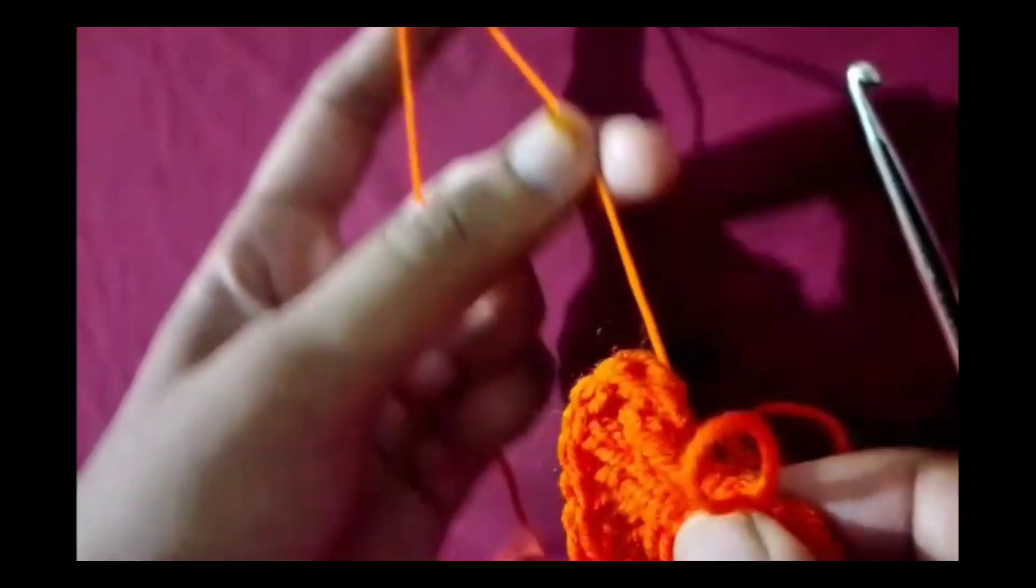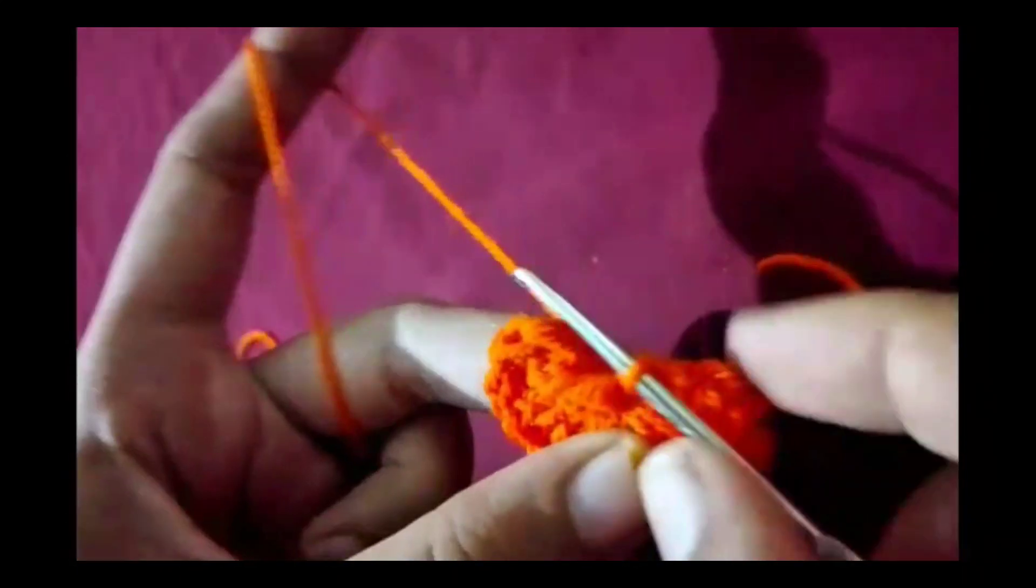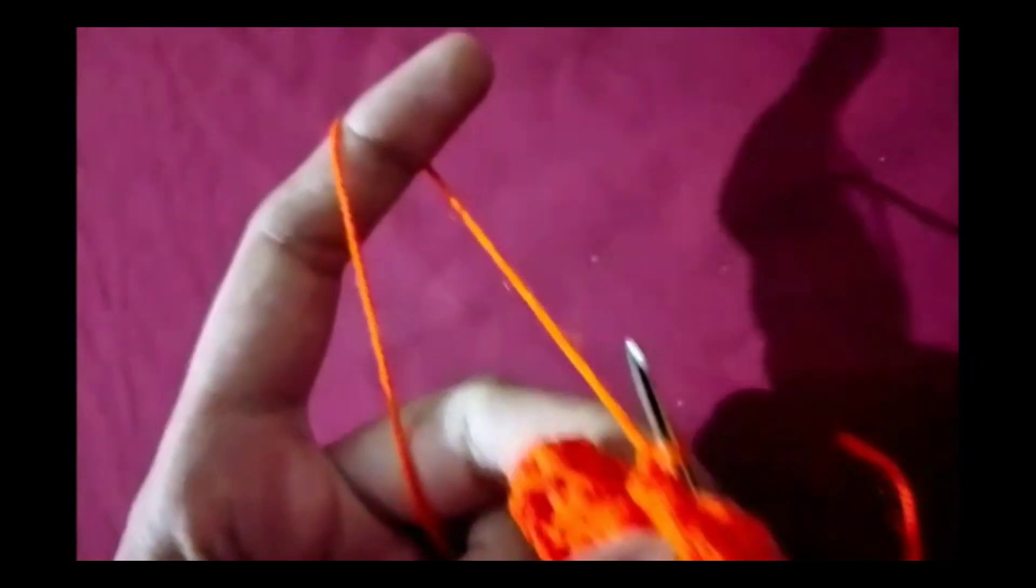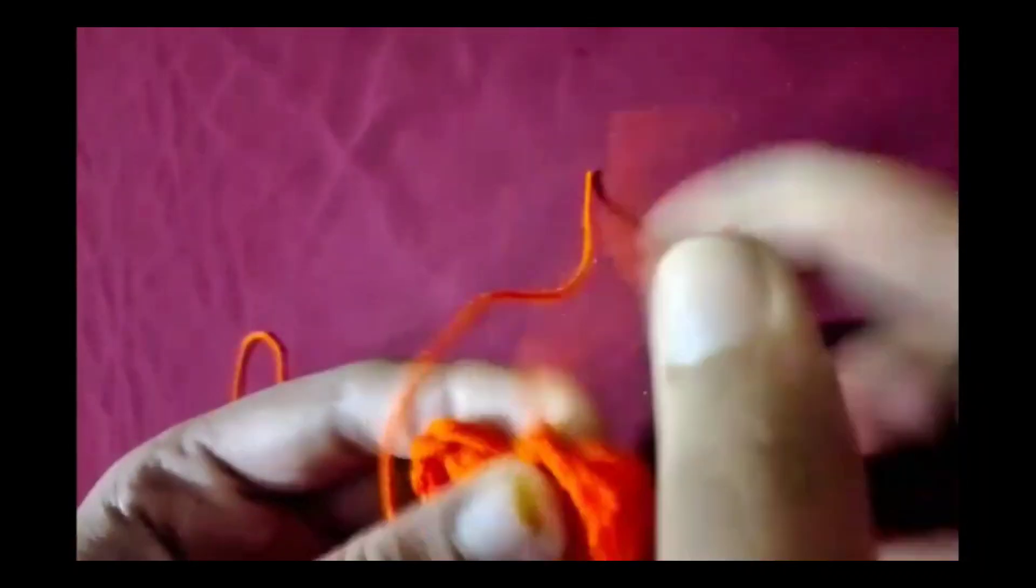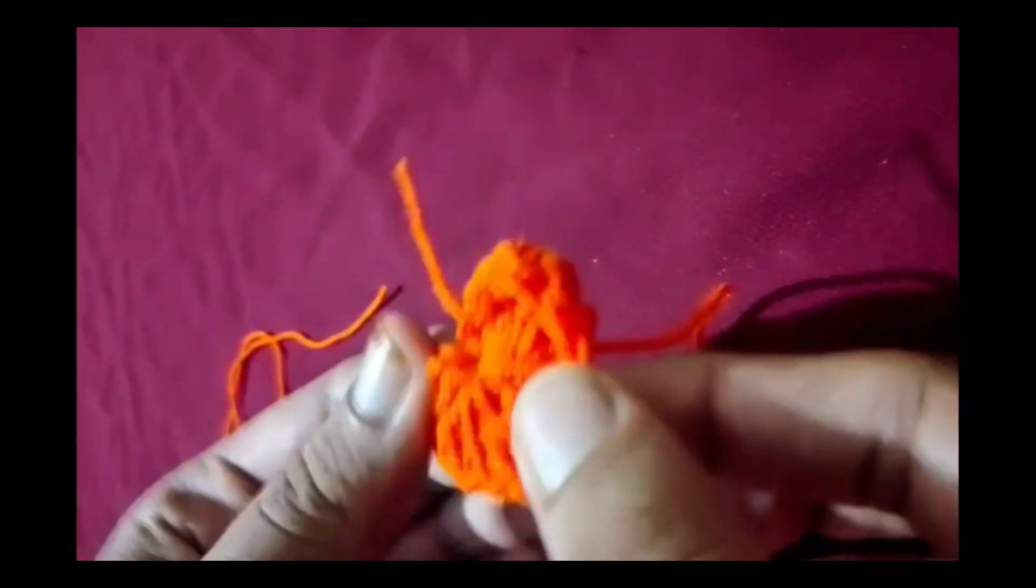Finishing the heart: cut the yarn leaving a small tail. Pull the yarn through the loop and tighten. Use your needle to weave in the loose ends.